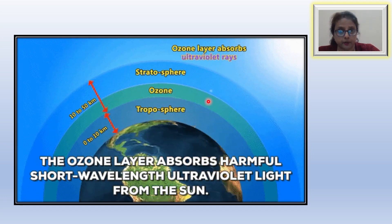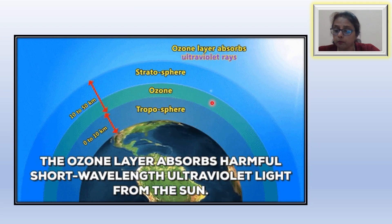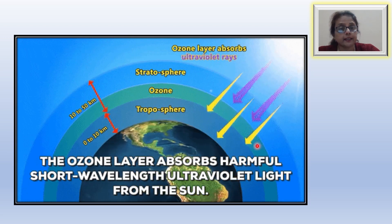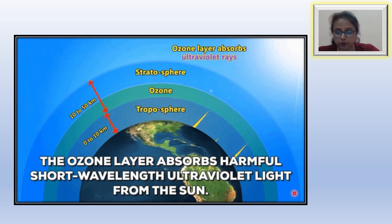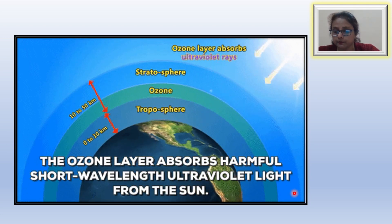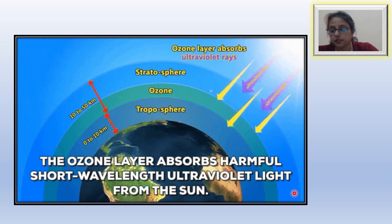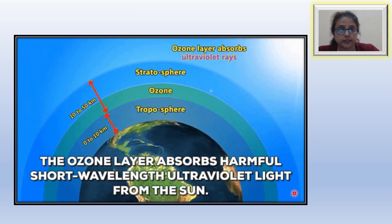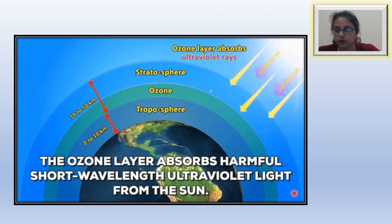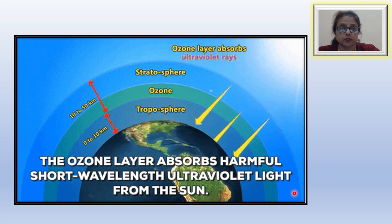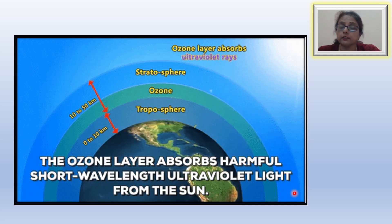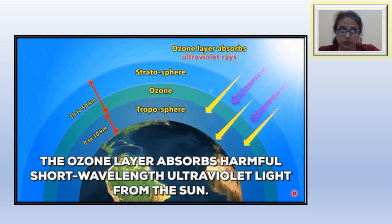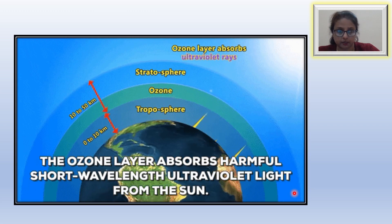Ozone is present both in the stratosphere and in the troposphere. However, the stratospheric ozone provides a protective shield around the earth, while the tropospheric ozone is a serious pollutant.